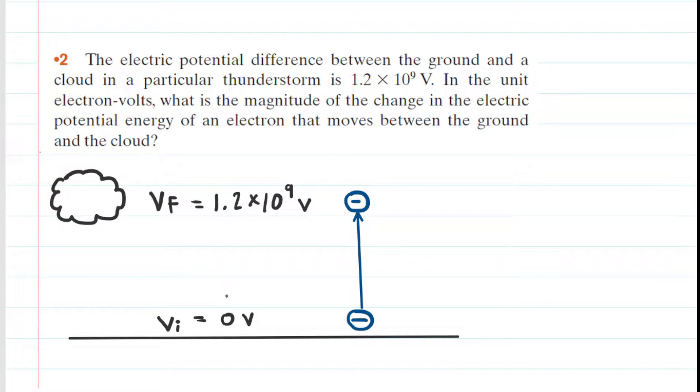We were told that there is an electric potential difference between the ground and the cloud, and it is given by this value right here. So what we have done is we have said that the ground has an initial electric potential of 0 volts and a final electric potential of 1.2 billion volts.